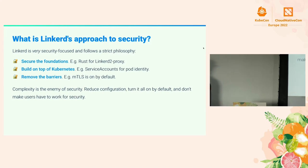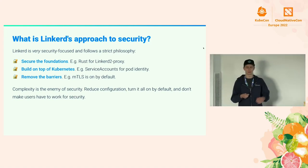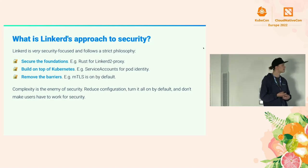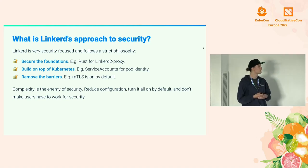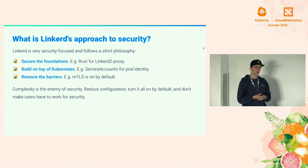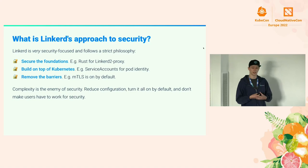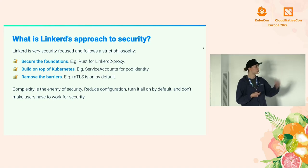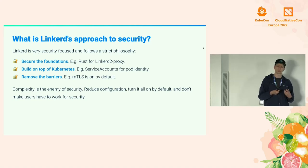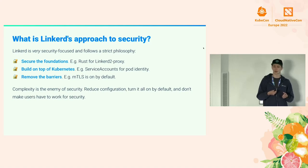Our approach to security is another one of our core ideologies: first keep it simple, second keep it secure. We want to secure the foundations, so we're using Rust for the Linkerd 2 proxy so we don't get any CVEs or memory vulnerabilities. We're leveraging almost entirely Kubernetes primitives, and for security we use service accounts for pod identity. We want to remove any barriers that you would have as an operator — that's why MTLS is on by default, and as of recent versions you can't actually disable MTLS. We want it to be on because we're strict believers in security.